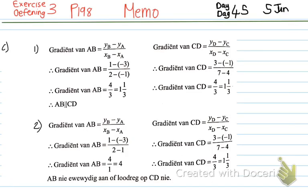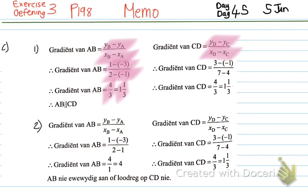Welcome back — it's the Exercise 3 memo. Number C1 says: determine whether line segments AB and CD are parallel, perpendicular, or neither. We work out the gradient of AB: subtract the y-values over the x-values subtracted, giving 1 minus negative 3 over 2 minus negative 1, which is 4 over 3, or 1 and a third. Because these answers are the same, the gradients are equal, which means AB is parallel to CD — the gradient of AB equals the gradient of CD.